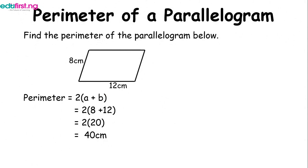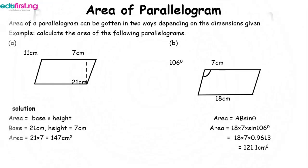Calculations under parallelograms include perimeter and area. For perimeter, the formula is 2(a + b). Here, a is 8 cm and b is 12 cm. Adding 8 and 12 gives 20, and 2 times 20 gives us 40 centimeters.